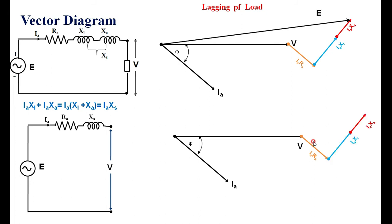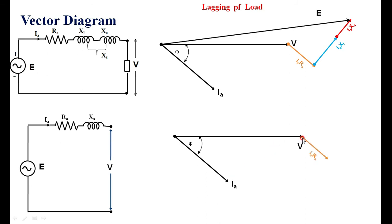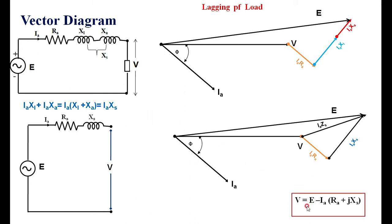This diagram can be referred to. First draw V, then I lagging V, then add IARa, add IAXl and IAXa, or directly add IAXs. We are getting E, and IARa plus IAXs gives IaZs. This is how you draw the vector diagram for lagging power factor — when the load connected is lagging in nature, this is the vector diagram from which we get E from V. The equation is: V equals E minus Ia times (Ra plus jXs), or equivalently E equals V plus Ia times (Ra plus jXs), with V as reference and I expressed with its power factor angle.